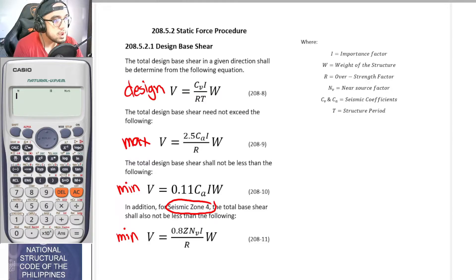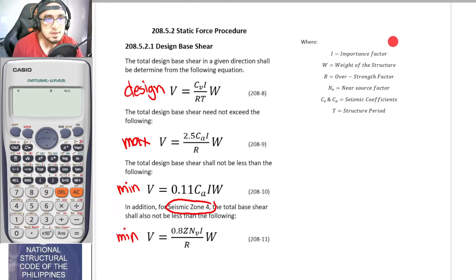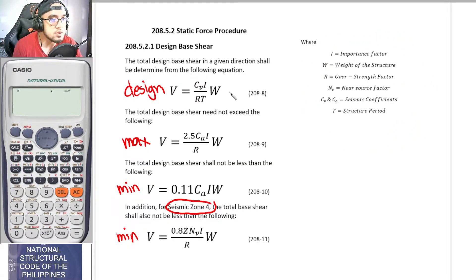In order to use these equations, you need to know the parameters: Cv, I, R, T, W, Ca, I, Na, Nv, and others. These are the parameters that must be solved first before computing the base shear itself.